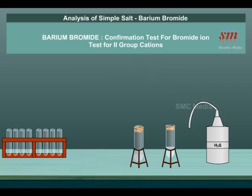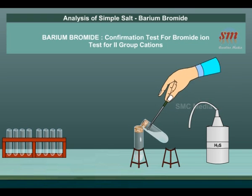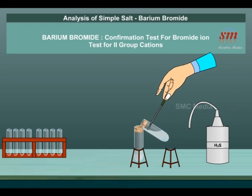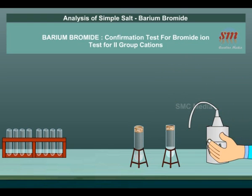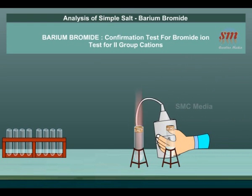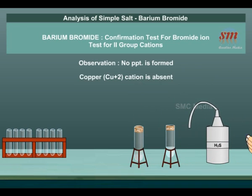Test for Second Group Cations: To the salt solution, a few drops of dilute HCl solution are added and H₂S gas is passed. No precipitate is formed. Inference: Copper Cu²⁺ cation is absent.